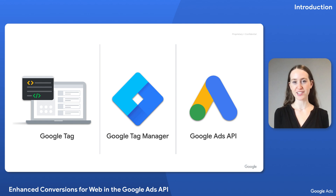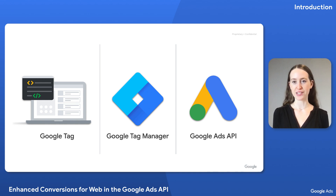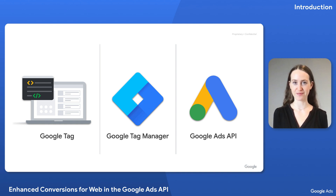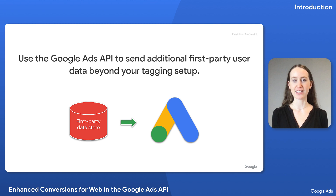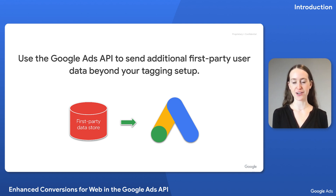You can upload Enhanced Conversions for Web through the Google Tag, Google Tag Manager, or the Google Ads API. If you're already using the Google Tag or Google Tag Manager for conversion tracking, you can set up Enhanced Conversions for Web with only slight changes to your configuration. Using the Google Ads API provides additional flexibility and control over your data, and allows you to send first-party data from your database or CRM within 24 hours of the conversion.